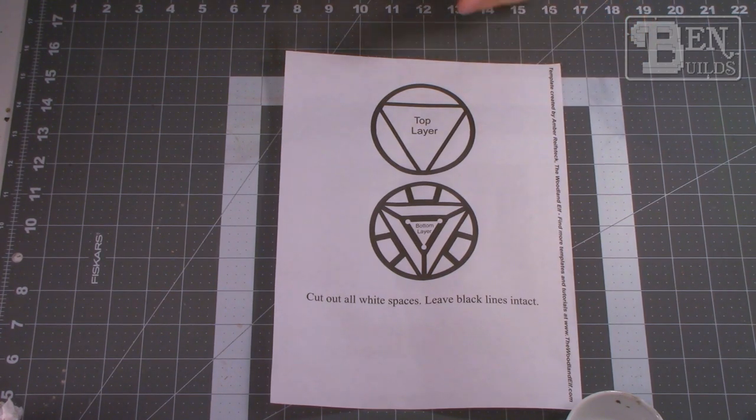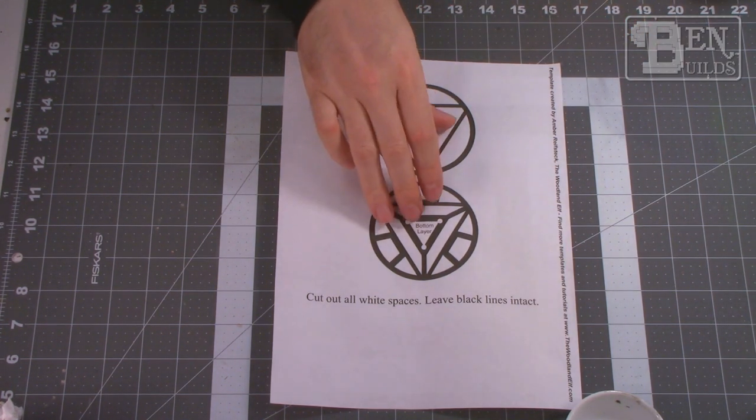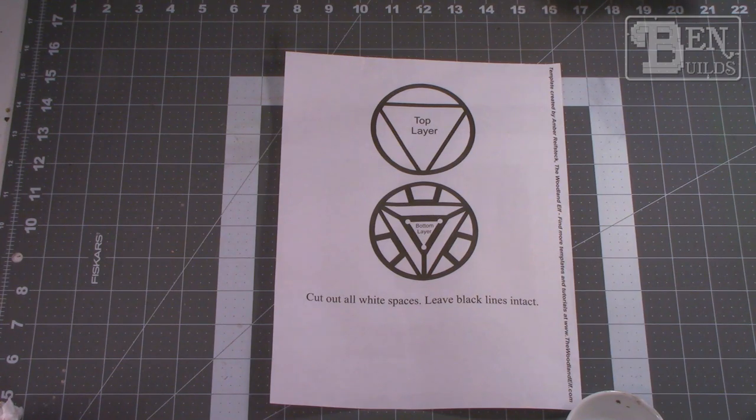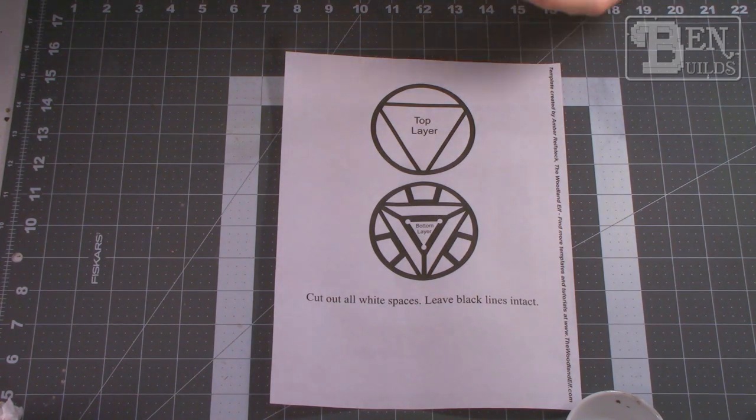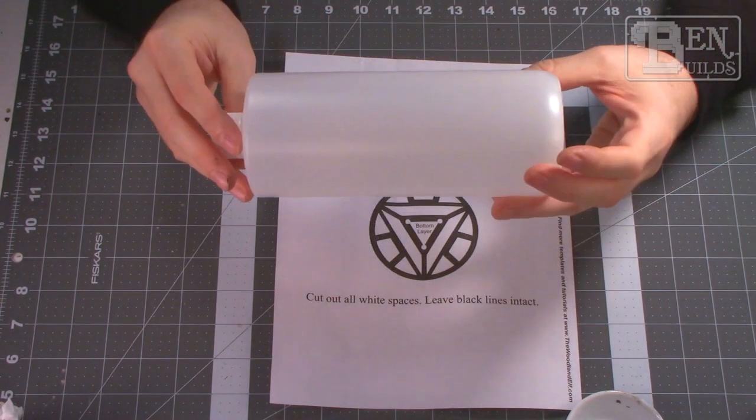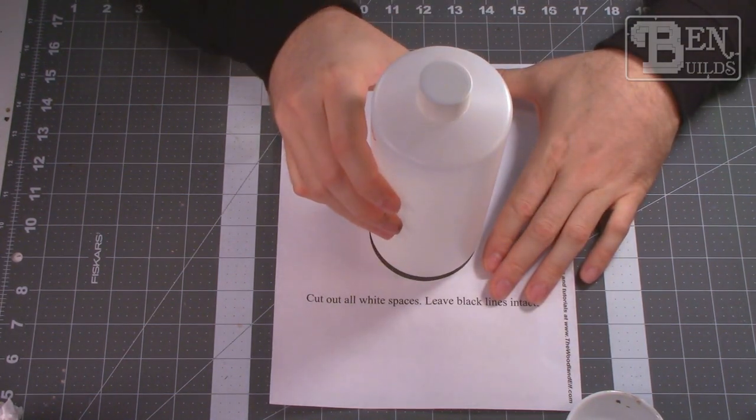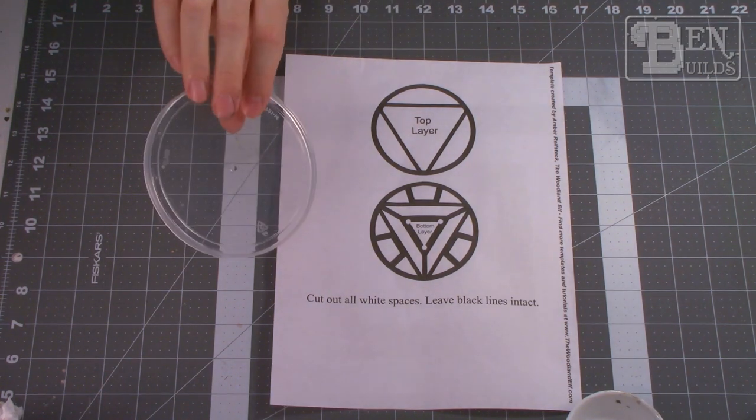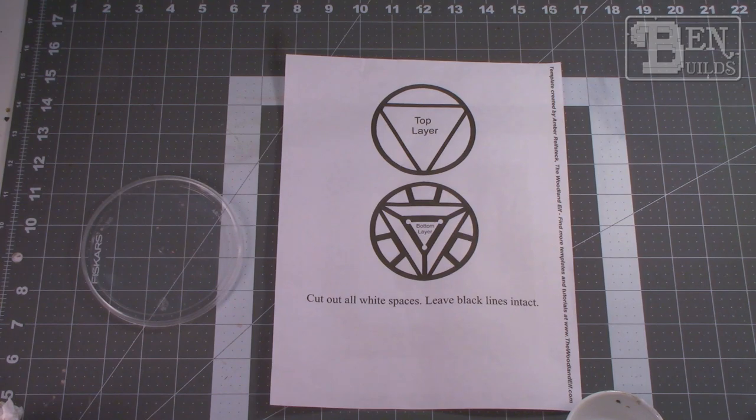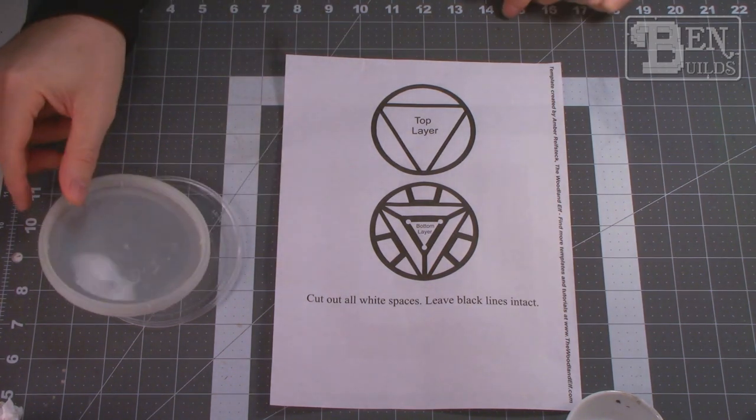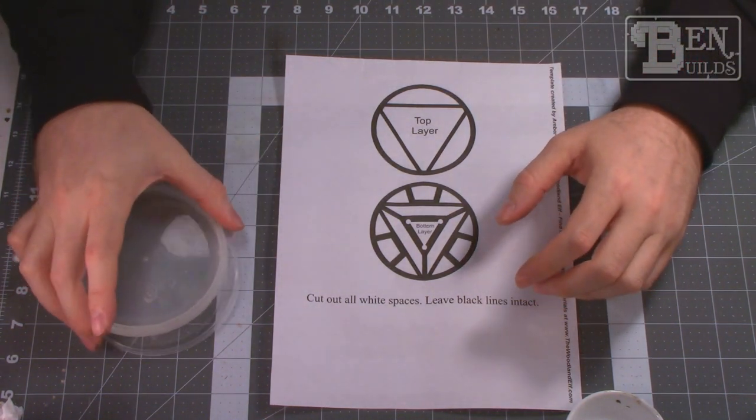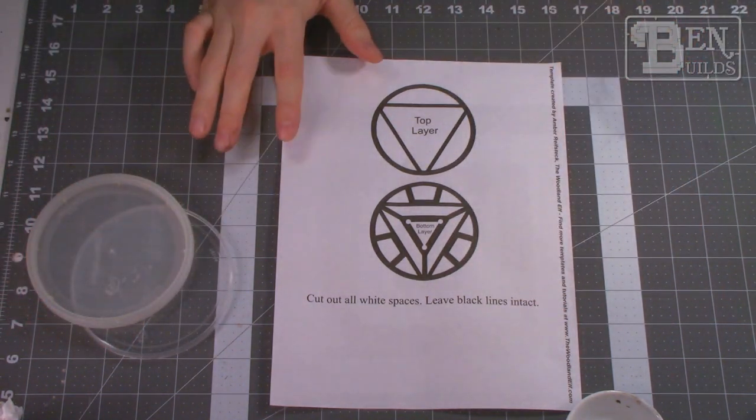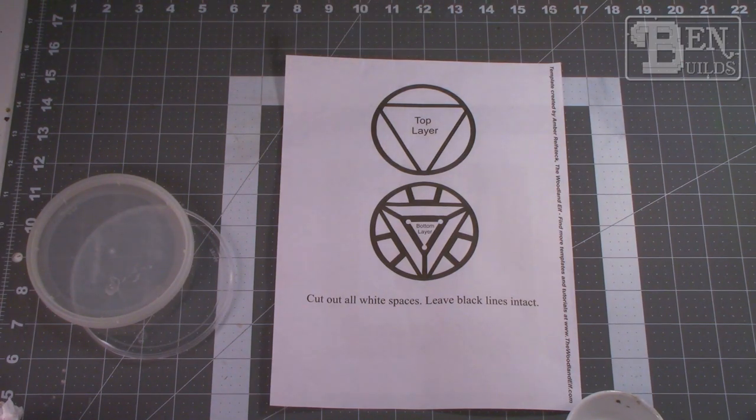I like the triangular shapes, very clean, very neat. So we actually have a template here that we downloaded from a website called thewoodlandelf.com. We also have this bottle here which is going to house some of our electronics and give this a little bit of depth. Now we're going to need to cut out each of these shapes so I have some plastic lids from takeout containers. We can use those to trace out these shapes and cut them into plastic so they're a little more durable and they'll do a better job of blocking light.